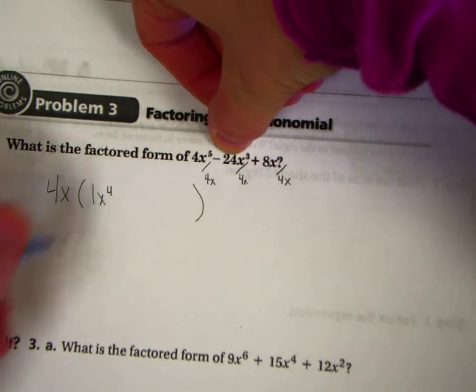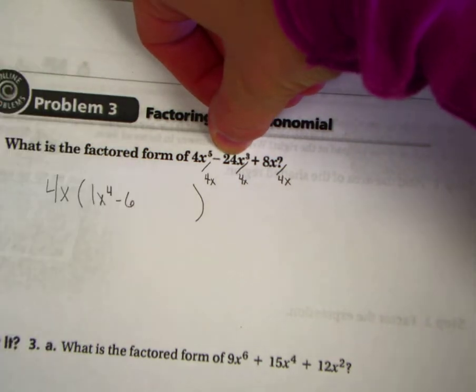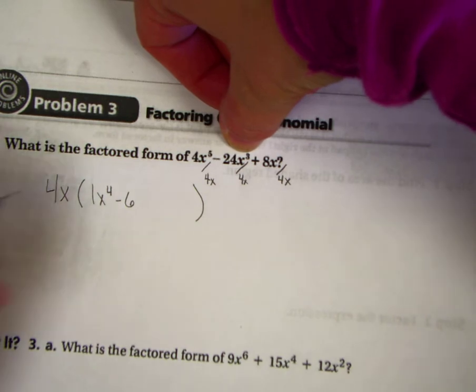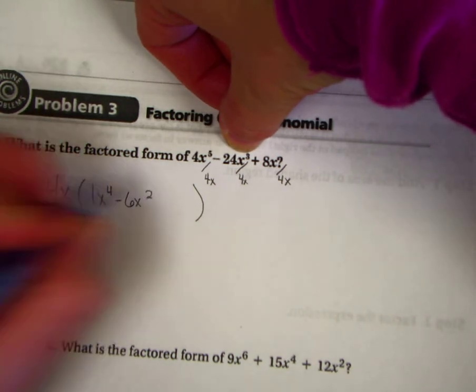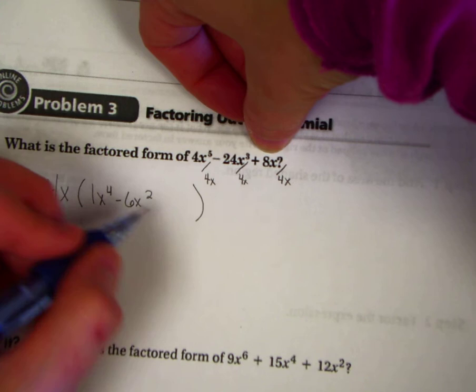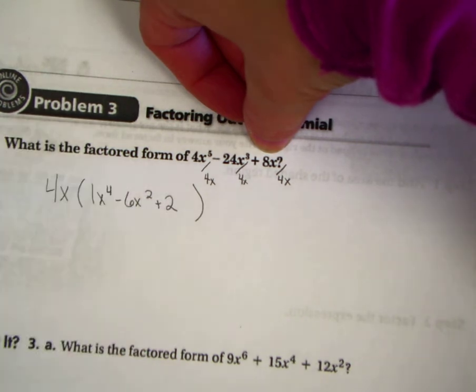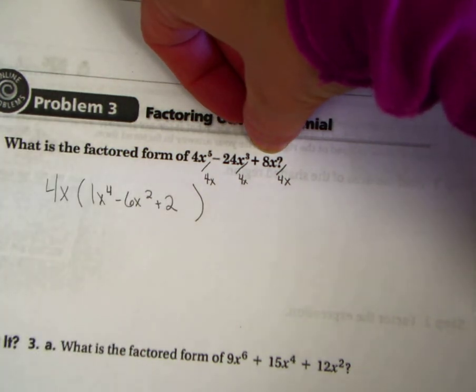Pull out a 4 from 24. That makes 6. Pull out an x from x^3. That makes an x^2. Pull out a 4 from 8. That makes a positive 2. Pull out an x from x. Well, that's it.